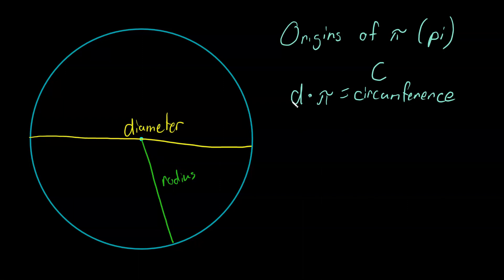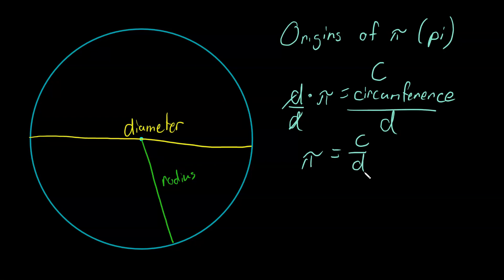They could measure the diameter and they could roughly measure the circumference, but it wasn't horribly accurate. So what they did is they would try to find this value — this pi. And using a little bit of algebra, we can divide by D, so pi equals C over D. They could measure a circle's circumference roughly and pretty precisely measure the diameter, and they found it equals approximately 3.